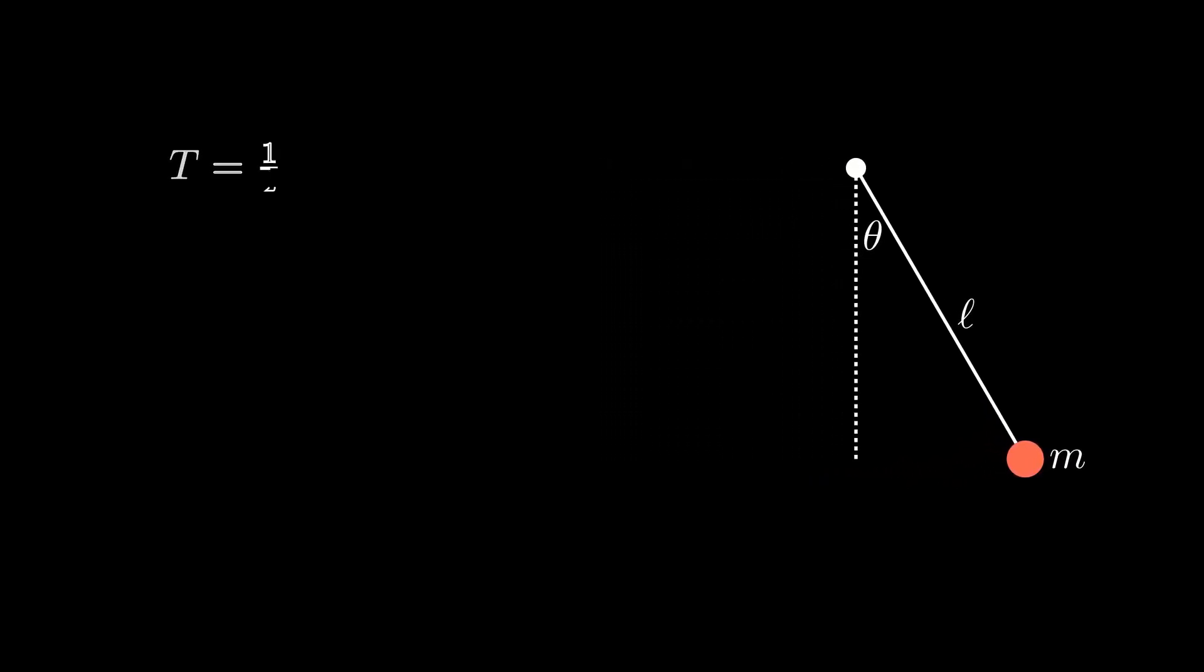First we find the kinetic energy of the system. Second we find the potential energy. We define the Lagrangian L as the difference between the kinetic and potential energy.